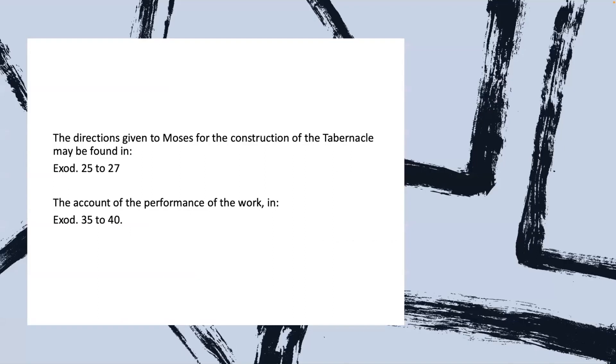The directions given to Moses for the construction of the tabernacle may be found in Exodus chapter 25 through chapter 27. The account for the performance of the work is in Exodus chapter 35 to chapter 40.